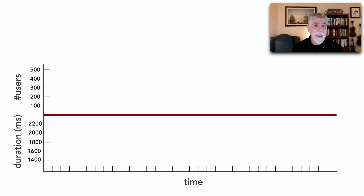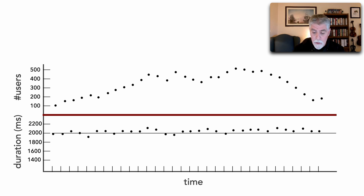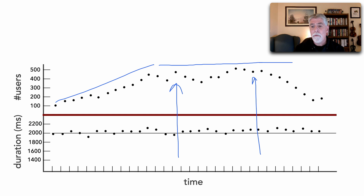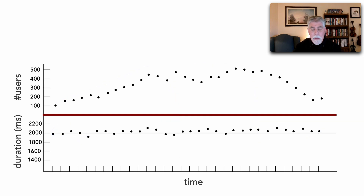Because of inter-service communication and latency involved with network security and data latency from multiple data retrievals, this is what our graph looks like. Our duration here is at around 2,000 milliseconds — almost two seconds response time. However, notice the same trend: as our load starts increasing, with two spikes going up to around 500 users, our response time remained consistent. That's what I mean about the relationship between scalability and responsiveness. The responsiveness can be slow — 2,000 milliseconds — but we can still have a highly scalable system.